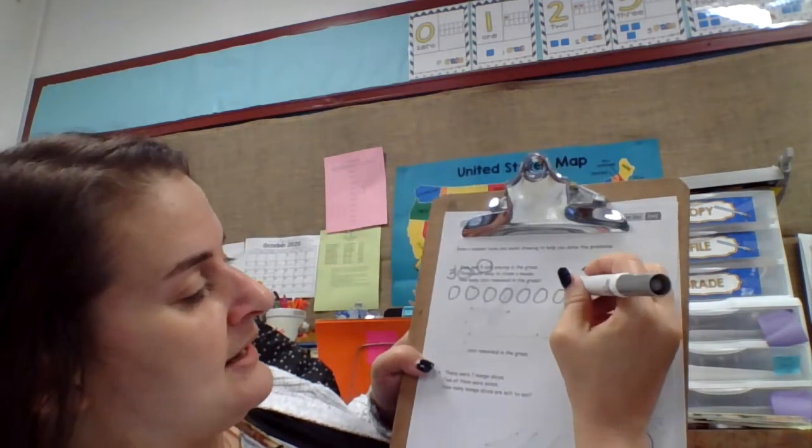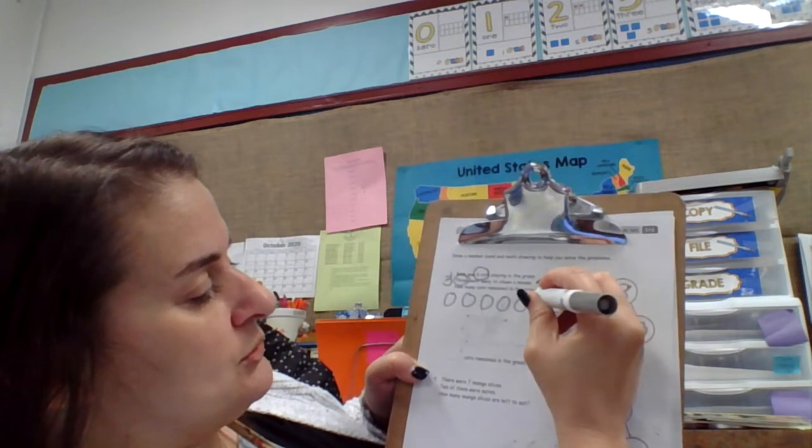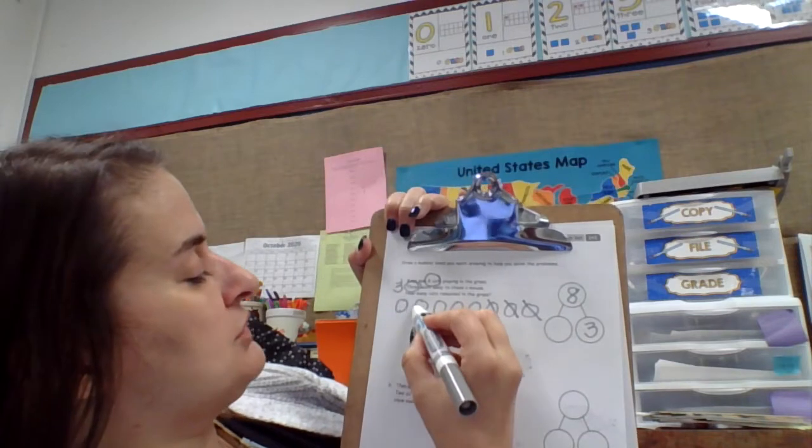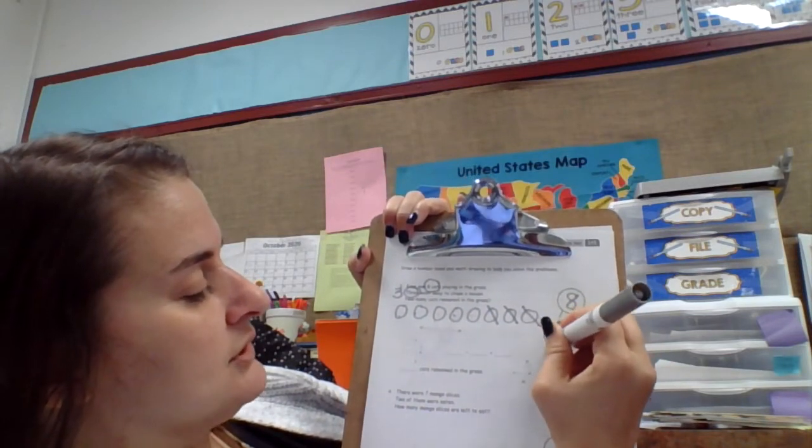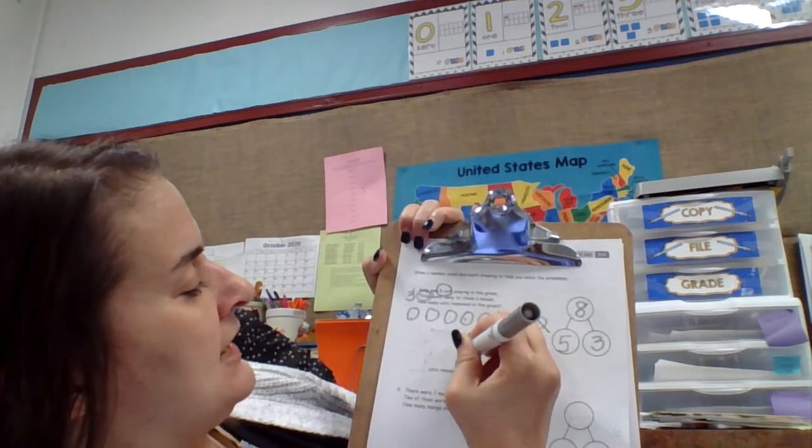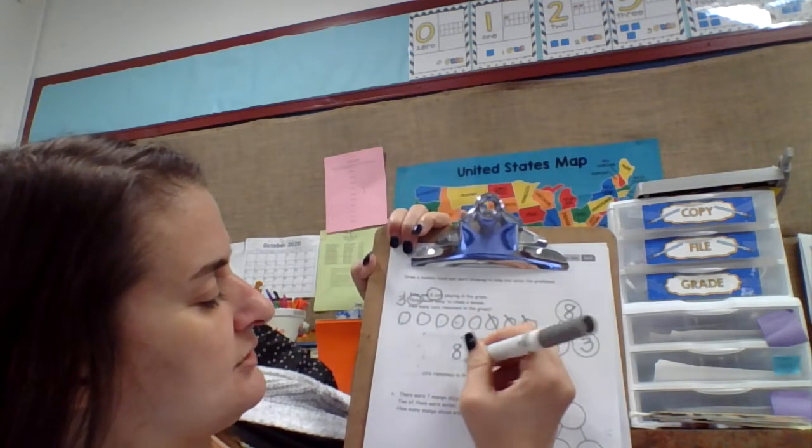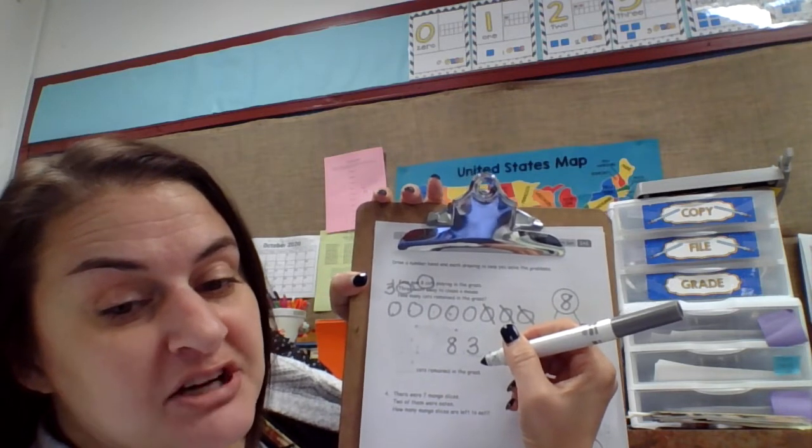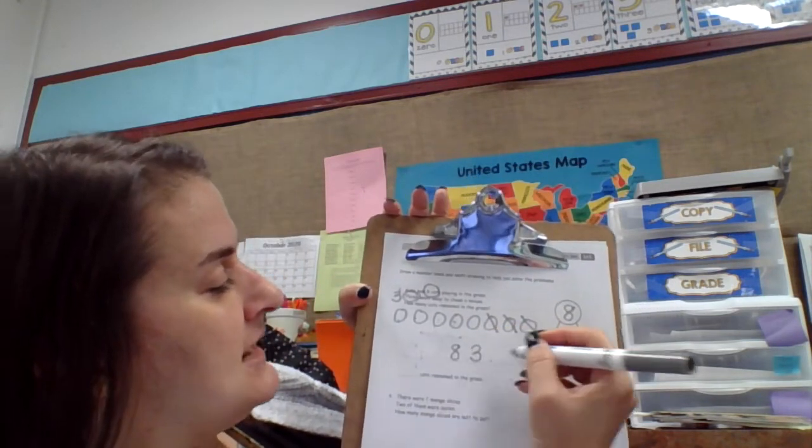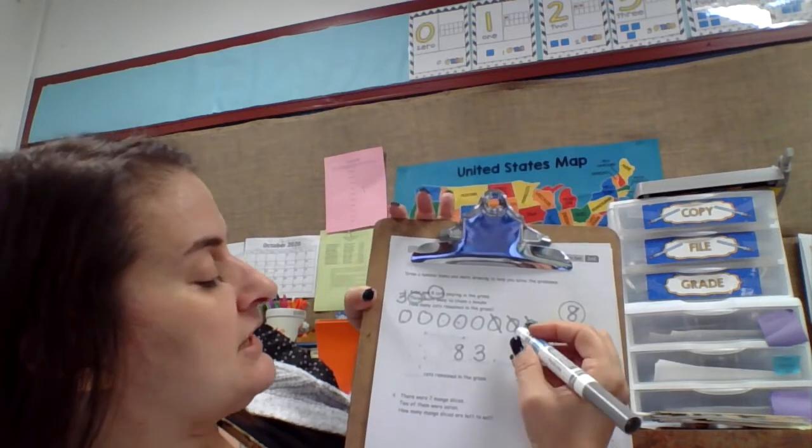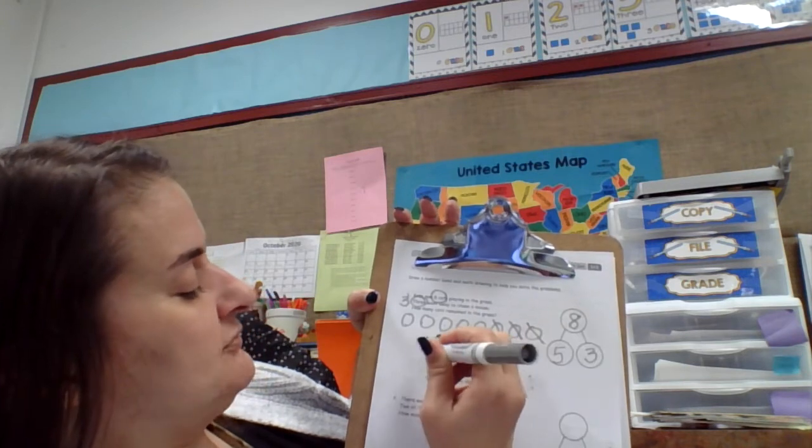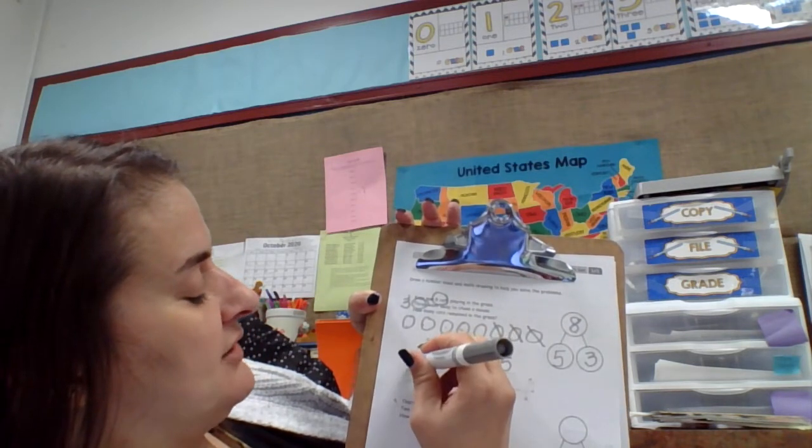All right, three went away. Bye bye three. One, two, three, goodbye. And we have one, two, three, four, five left over. So I had eight. I took away three. Another word for subtraction is take away. Eight take away three. Left me five. Five cats still in the grass.